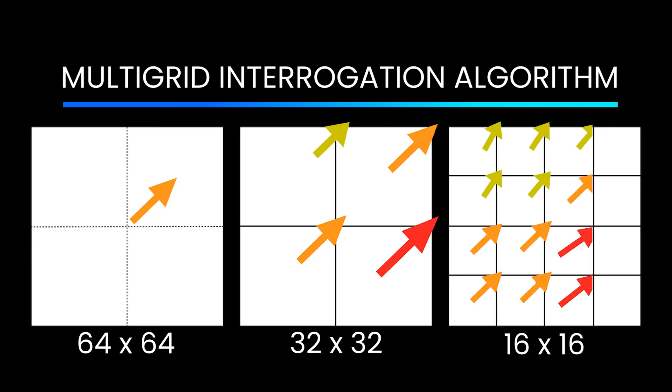This action is repeated for finer grid spacing and smaller interrogation domains, as you can see with 32x32 pixels and 16x16.